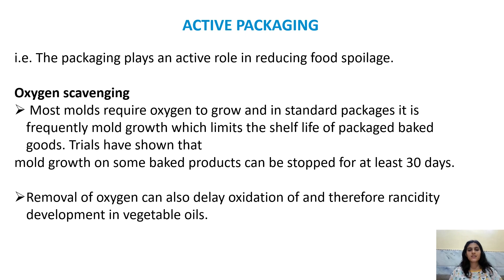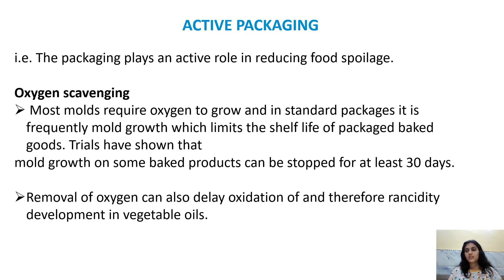There are different types of active packaging — sachets and pads, and components directly incorporated into packaging materials. Sachets and pads are placed inside packages with active ingredients incorporated into them. However, disadvantages include that they cannot be used in liquid foods, cannot be used in packages made of flexible film (as the film clings to the sachet), and there is a risk of accidental ingestion by the consumer. Incorporating scavengers directly into packaging material is more efficient.